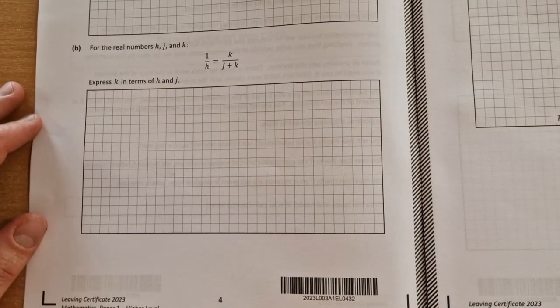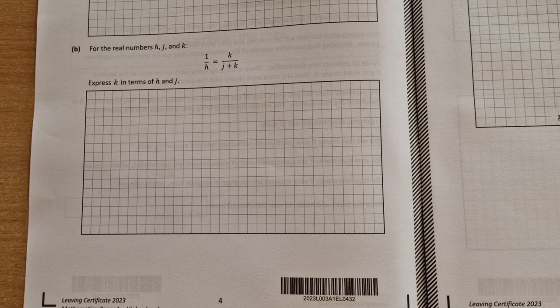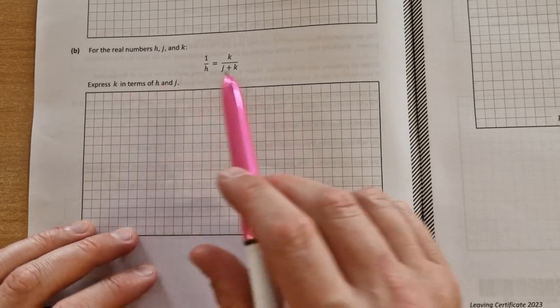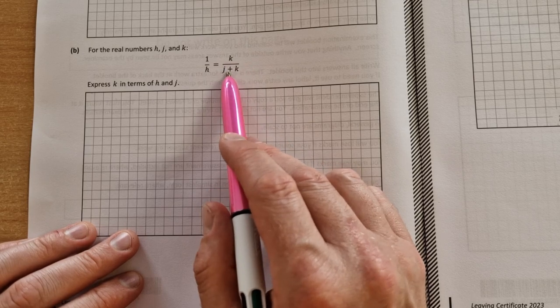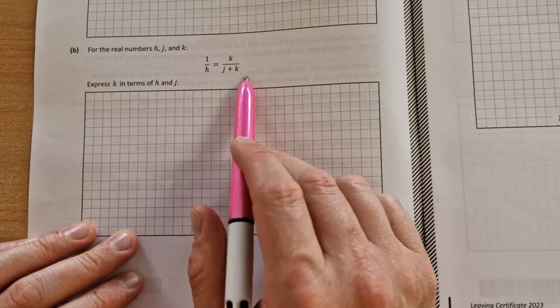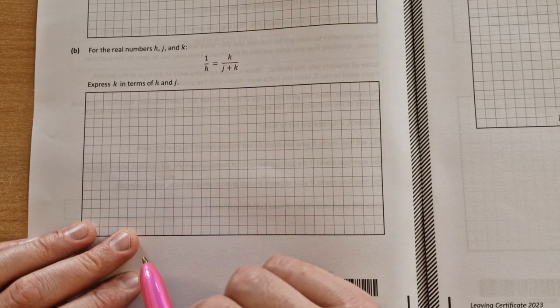For part b then, you were asked to express k in terms of h and j, and this is your little equation here. 1 over h is equal to k over j plus k. So it's just manipulating the formula to get k on its own.